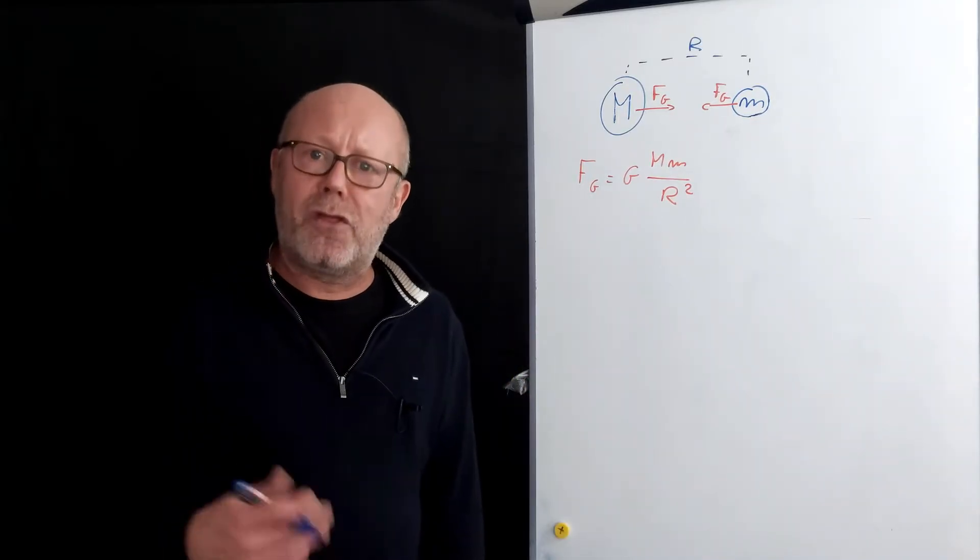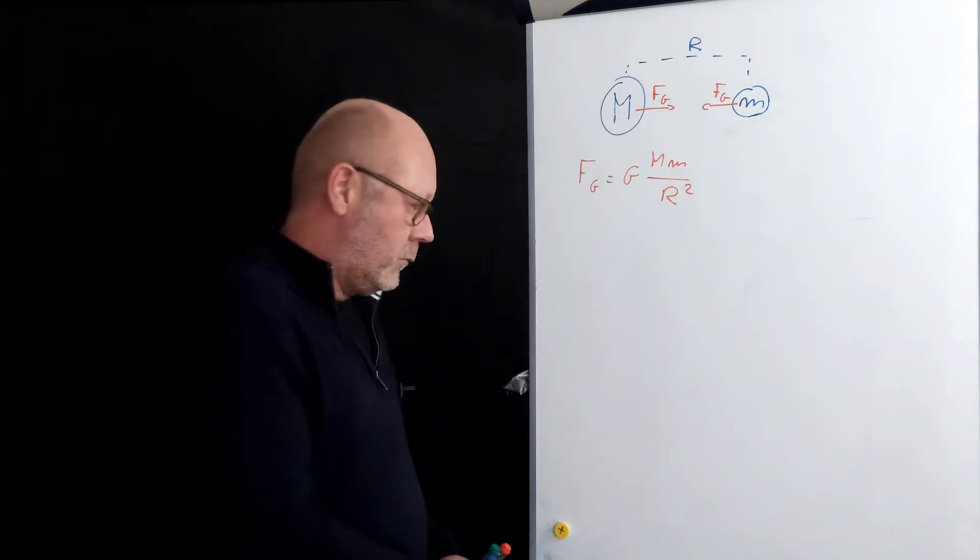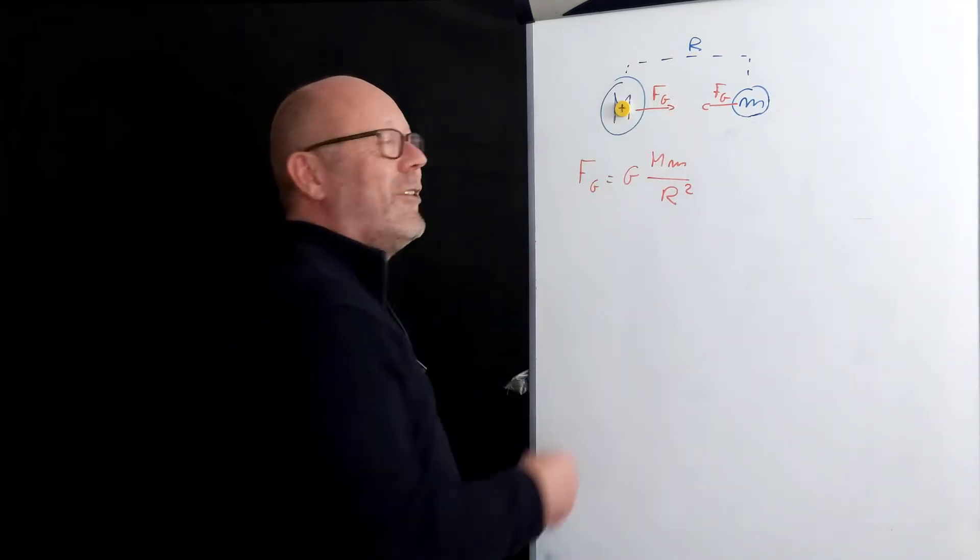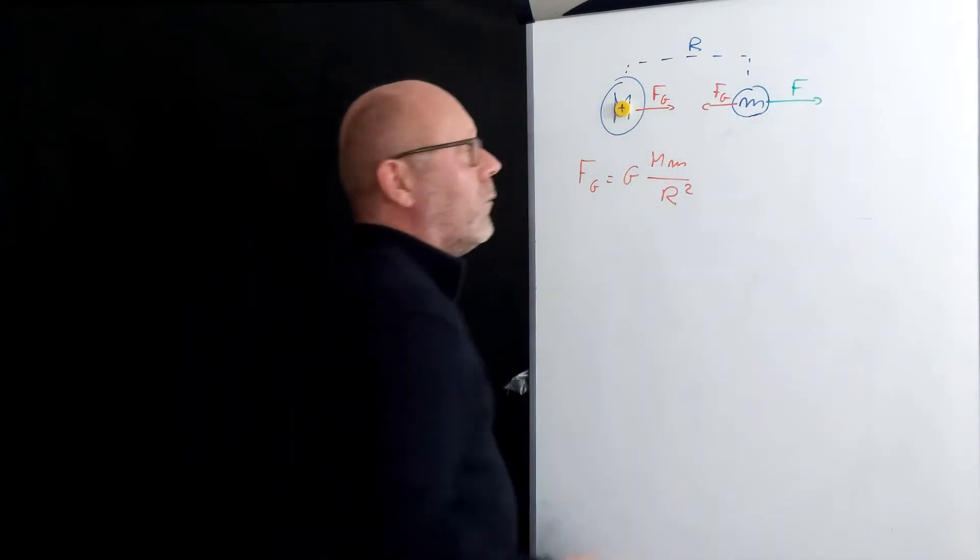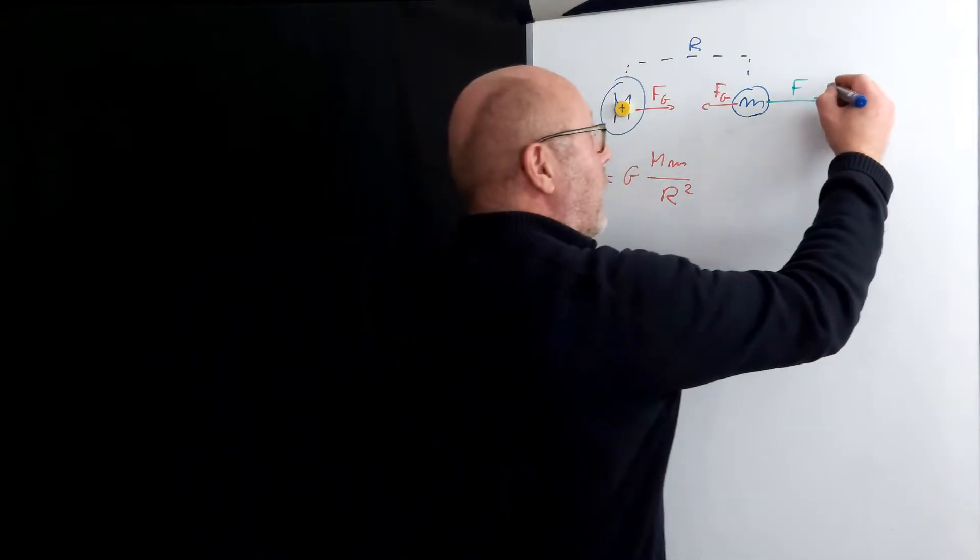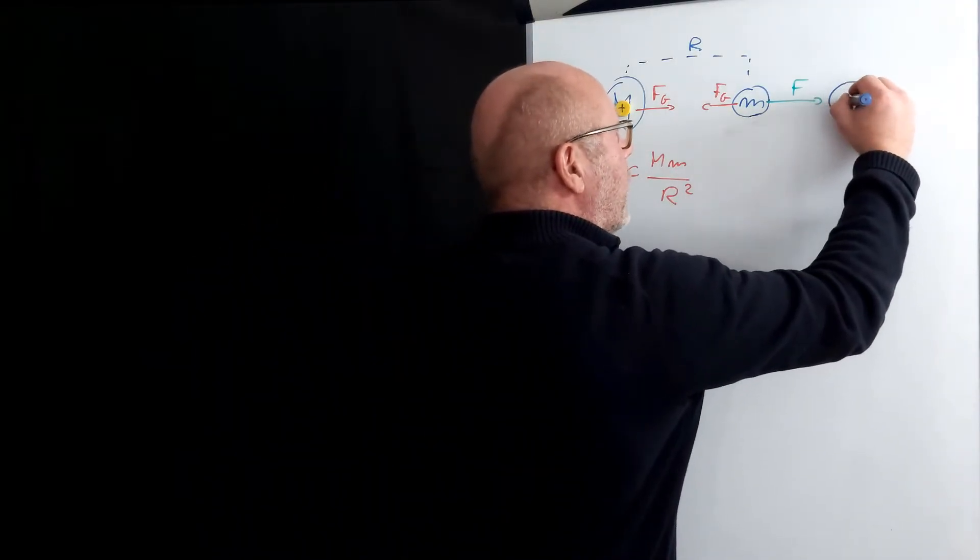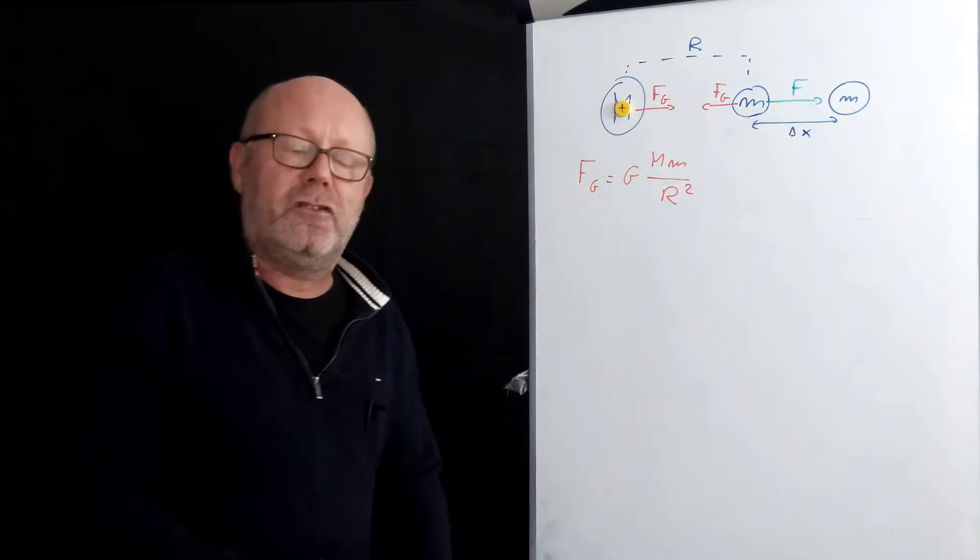If I want to increase the distance between these two masses, what do I need to do? I could pin the planet on the board and pull the moon away. After a certain time, the moon would be there, displaced by a displacement delta x compared to the original position.